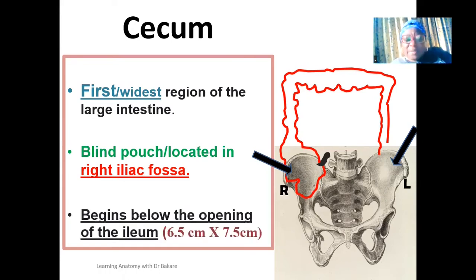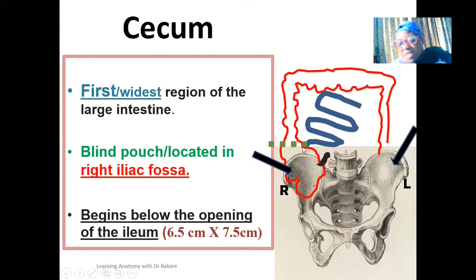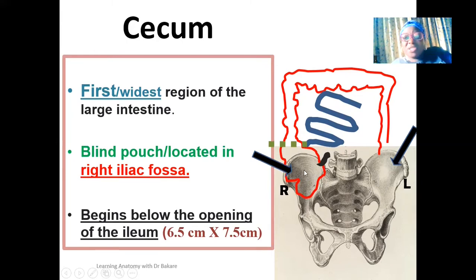The cecum is located below the opening of the ileum. The ileum is the terminal region of the small intestine — this is the small intestine highlighted in blue, and the terminal part is the ileum. This is the region that terminates into the cecum at this level, so the cecum begins here and descends down to be located within the right iliac fossa. It is about 6.5 cm in length and 7.5 cm in diameter, making it the widest region of the large intestine.